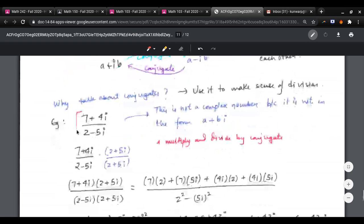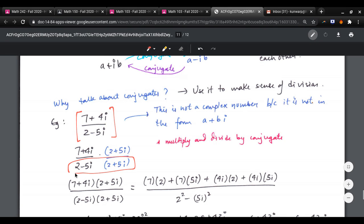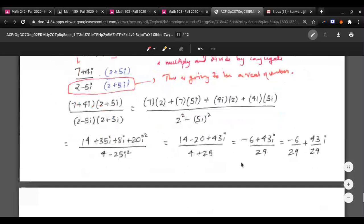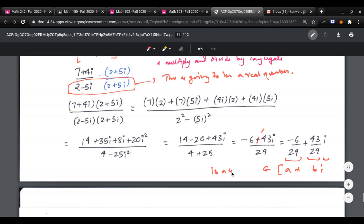7 plus 4i over 2 minus 5i. In this form, it is not a complex number because it's not a plus bi. So, what we do is we multiply and divide by the conjugate of the denominator. Why we do that is because now we know that when we do this, this is going to be a real number. And then the top part doesn't matter if it's imaginary because the bottom is real. And then over here, you can split it as two fractions. And now that is of the form a plus bi, which means it is a complex number.